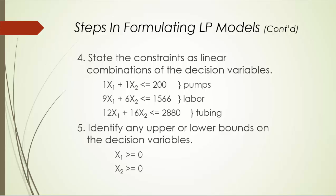Similarly, for the labor constraint, the hours of labor needed next month cannot exceed those available. The labor needed is 9x1 + 6x2, and the labor available is 1,566 hours, so the labor constraint is 9x1 + 6x2 ≤ 1566. For the tubing constraint, similarly, we have 12x1 + 16x2 ≤ 2880.